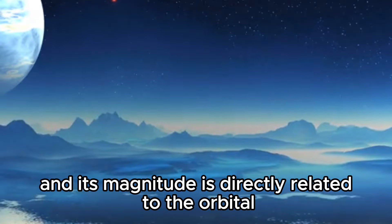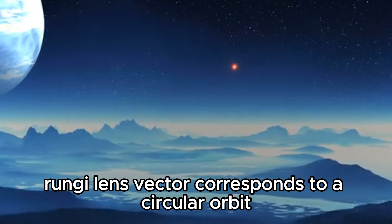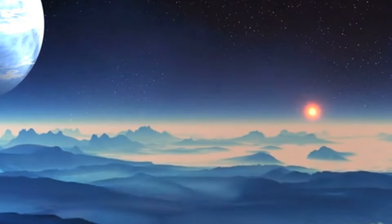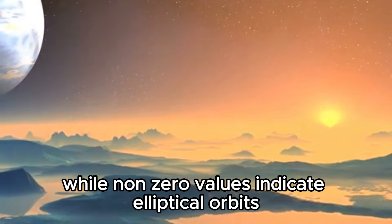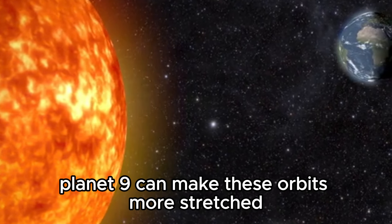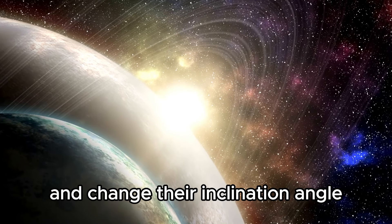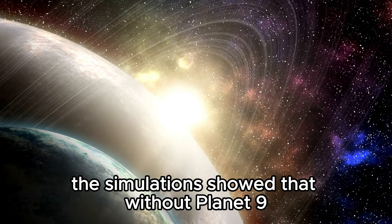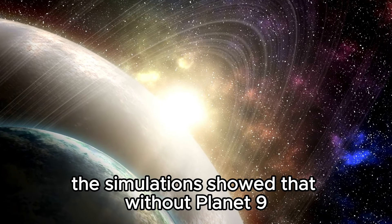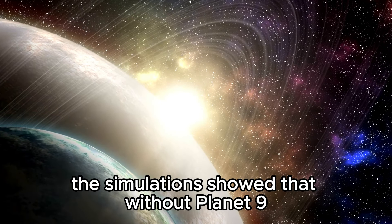Its direction gives the orientation of the ellipse, and its magnitude is directly related to the orbital eccentricity. A zero Runge-Lenz vector corresponds to a circular orbit, while non-zero values indicate elliptical orbits. Planet Nine can make these orbits more stretched and change their inclination angle. The simulations showed that without Planet Nine, fewer TNOs come close to Neptune.